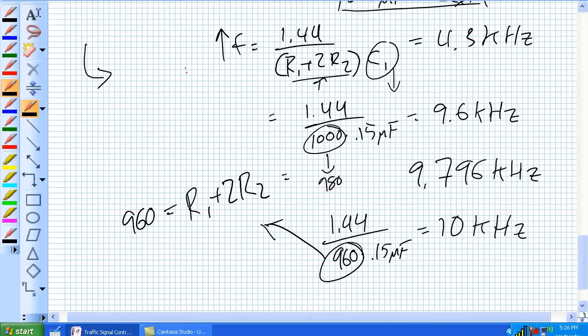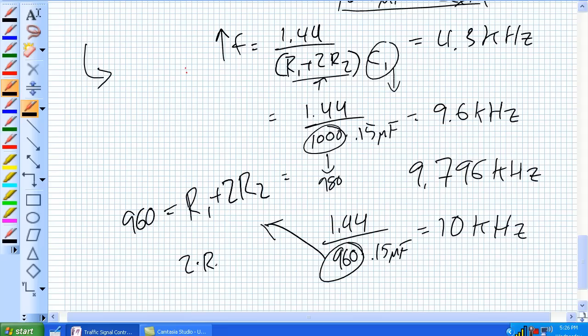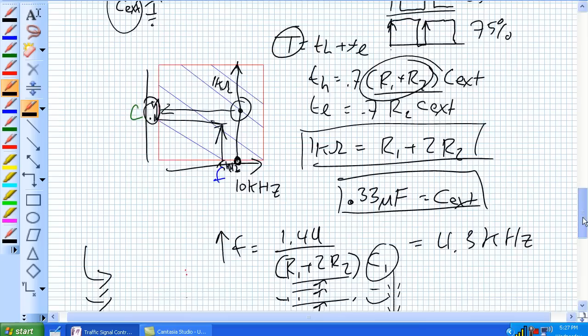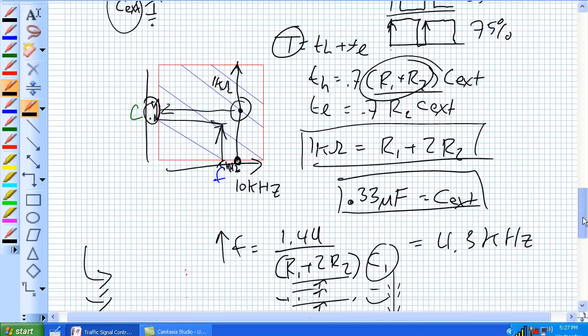Your duty cycle can fluctuate by making R1 or R2 bigger or smaller. So let's just pick, let's make R2, let's see, 80. So if R2 is 80, what's my R1 going to be? R1 should be 800 ohms. How does that affect our duty cycle? Time high, time low. Time high is charging out through two resistors, 0.7 R1 plus R2 C external. Time low, 0.7 R2 C external.